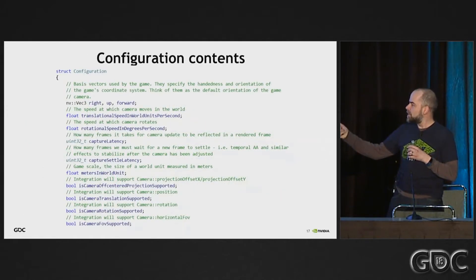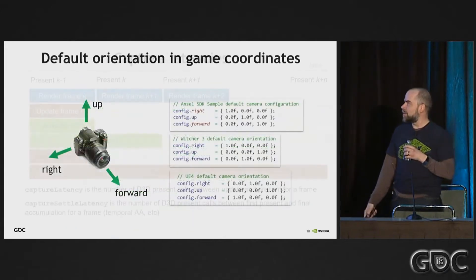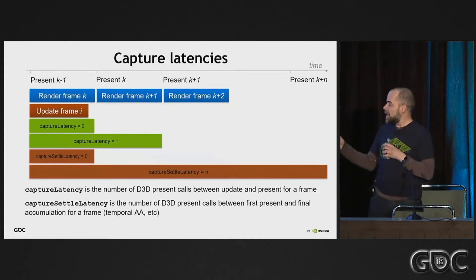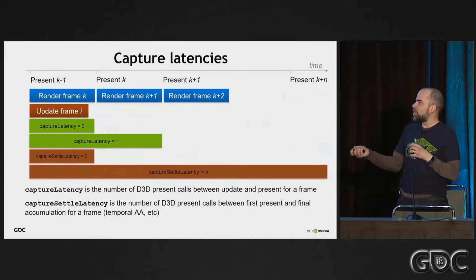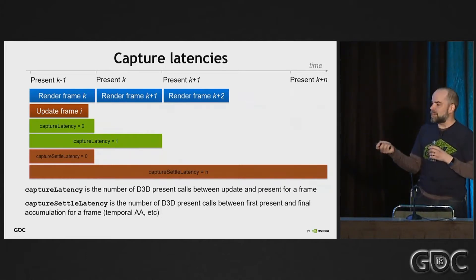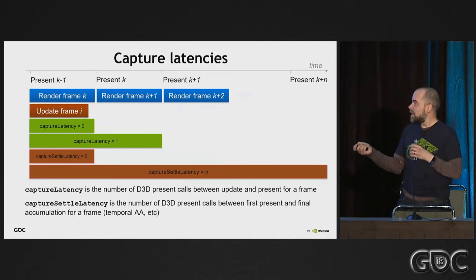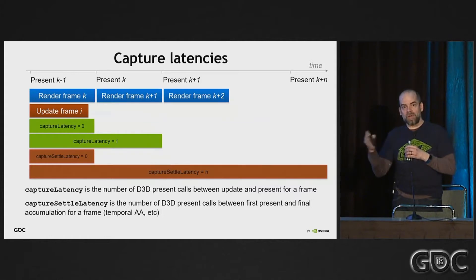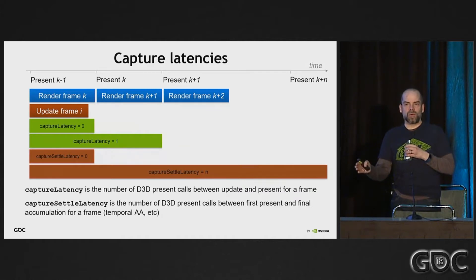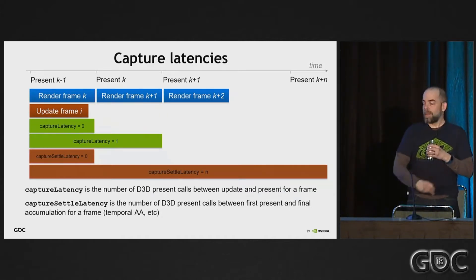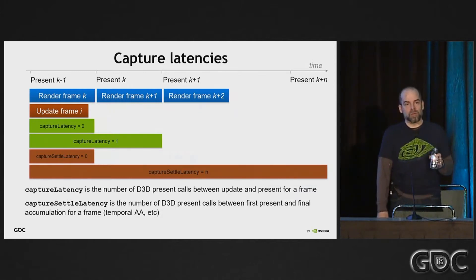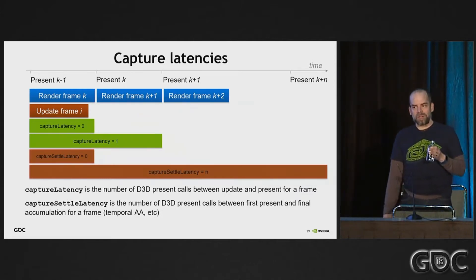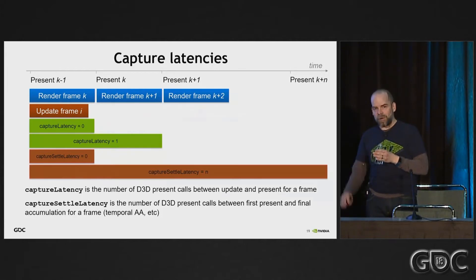One of the pieces of the configuration struct is capture latency and capture settle latency. These are slightly more complicated compared to everything else, which has been really straightforward so far. Capture latency itself is almost never used, but it may be used in a couple of situations where you want to handle some input latency. Capture latency is a number of D3D present calls to effectively let run before you update the camera - it allows you to control the frequency with which updates to the camera happen with respect to the rendering.